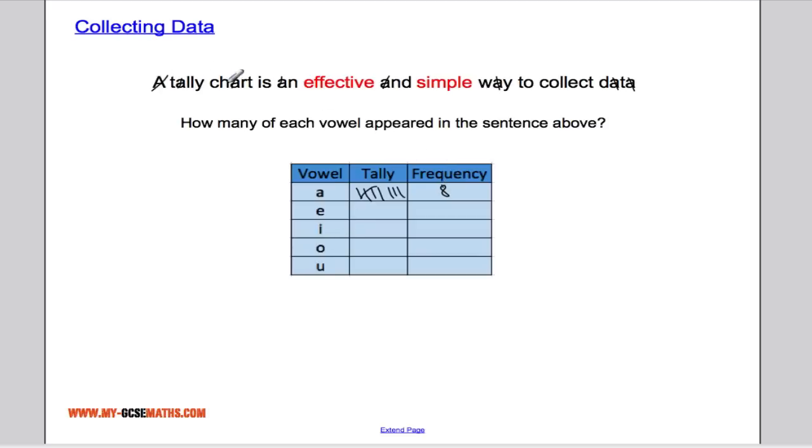Letter E, again we work our way through the sentence ticking them off as we go 1, 2, 3, 4, 5, so right the way through the sentence a few times tallying up how many times each one appears. And when you're finished you should have something like this.